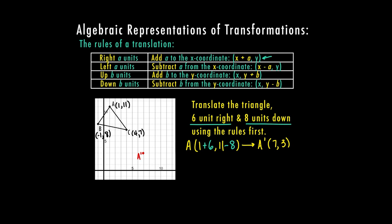Then we do the same thing with B. Point B is at x = -1, and I add 6. Y is at 8, and I subtract 8. So B prime is at (-1 + 6) = 5, and (8 - 8) = 0. I plot that point at (5, 0). There's my B prime.